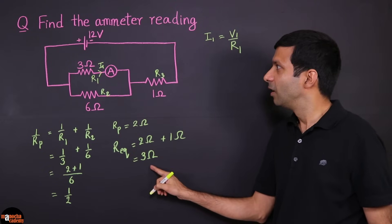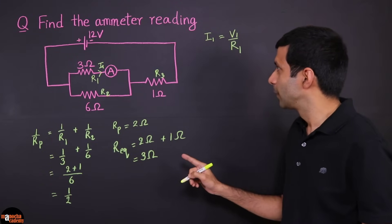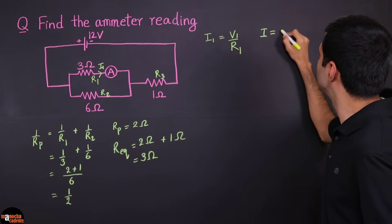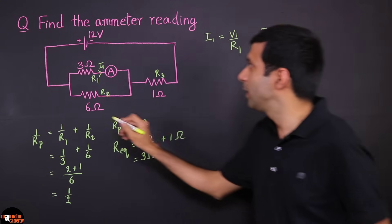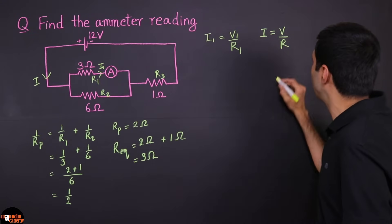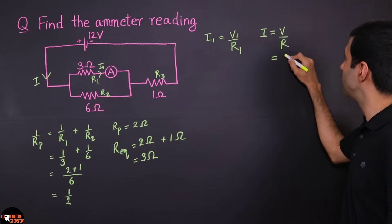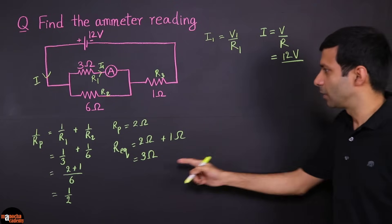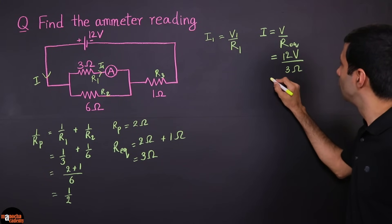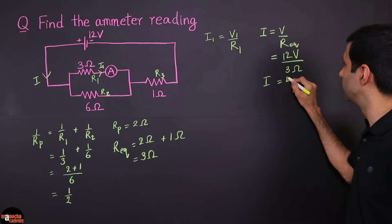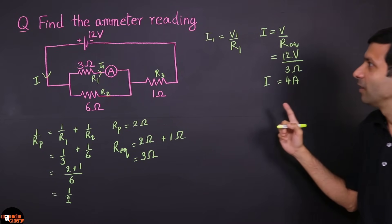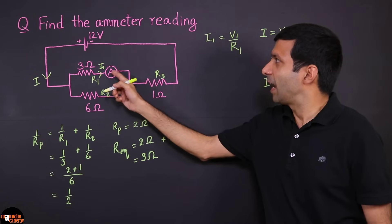Now how does that help us? Because now we can use Ohm's law: I equals V by R. Here I is the current in the main circuit — the main current. Now I can use the 12 volt total voltage and the equivalent resistance of 3 ohm. So the total main current is 4 ampere. And we are interested in finding the current passing through the ammeter, I1. So we know 4 amperes is flowing through here, and it's going to split into I1 and I2.